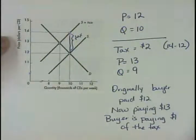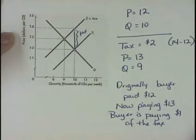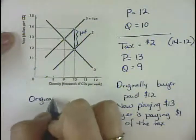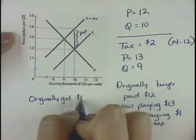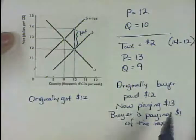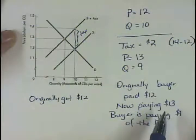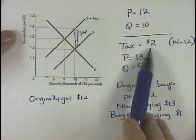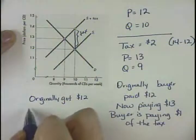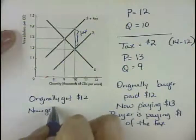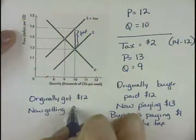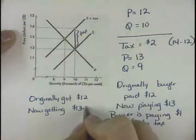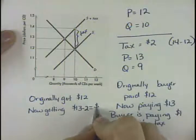Now we can look at it on the side of the seller. The seller originally got $12 when they sold the CD. Now the buyer is paying them $13, but out of that $13 they've got to submit to the government a $2 tax. So now they're getting $13 from the buyer but they have to pay that tax of $2. So now they're getting $11.